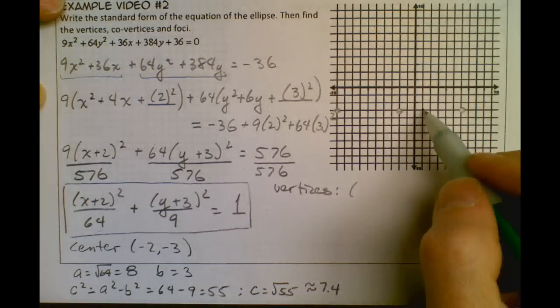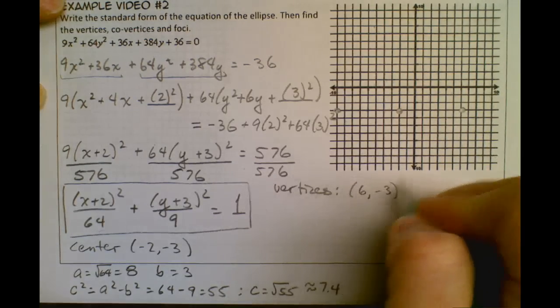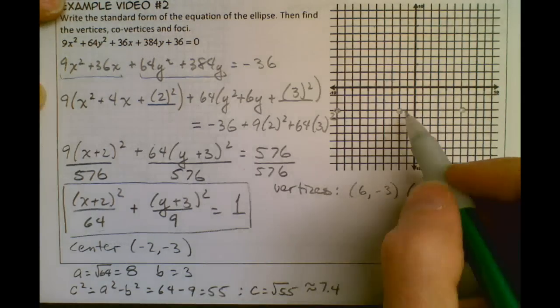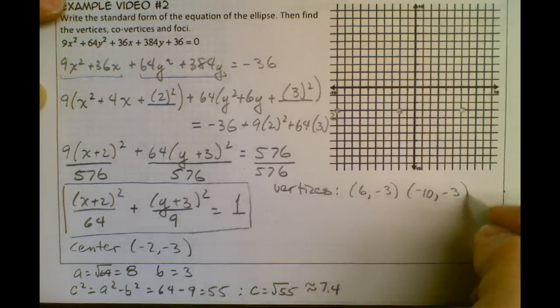So I've got (6, -3), because I'm down 3, and the other one is going to be (-10, -3), so there's my vertices.